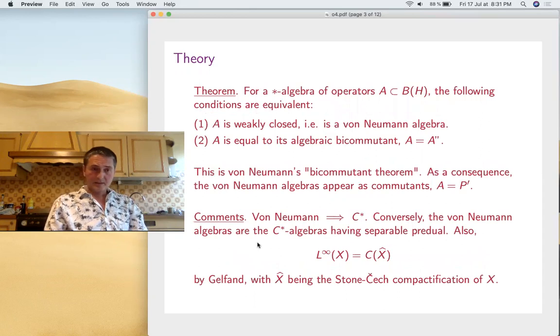Now, what the theory says, the basic theory, first of all, is the discovery by John Von Neumann that the condition of being weakly closed is the same as being equal to the bicommutant. You can take the commutant inside B(H), right? Everything lives inside B(H). And the commutant of the commutant is purely bigger than A. A is included in the double commutant of A. If this is an equality, it means exactly that A must be weakly closed.